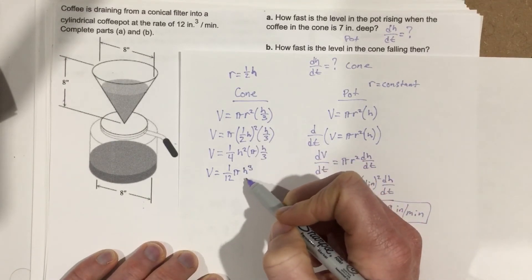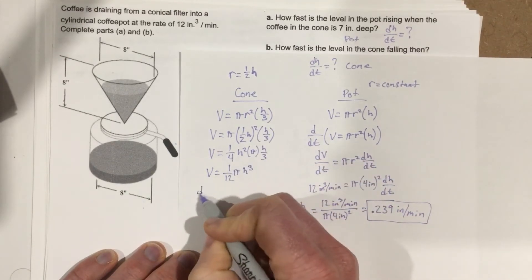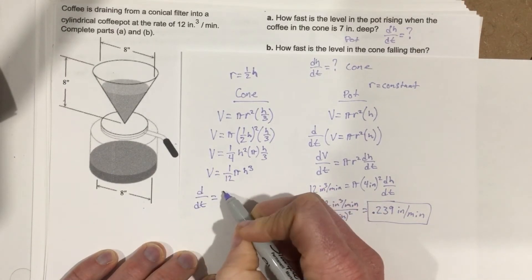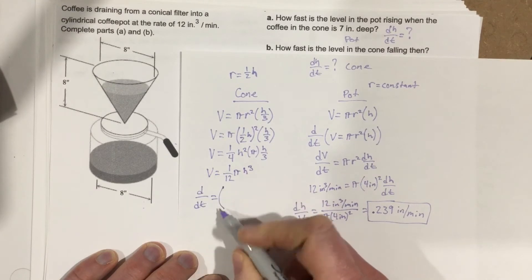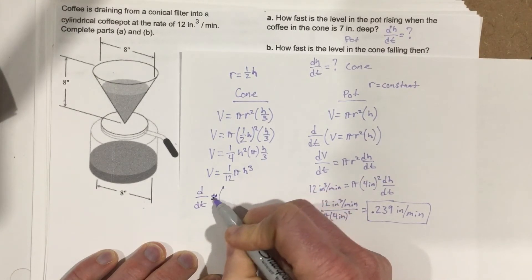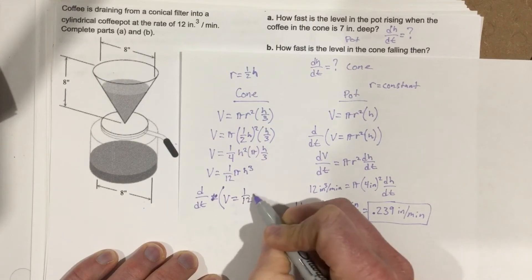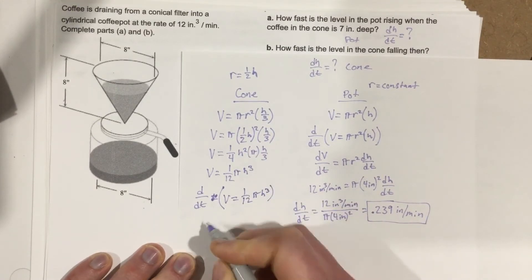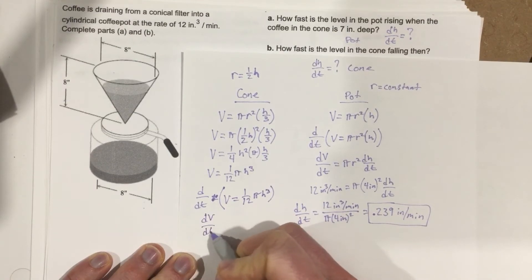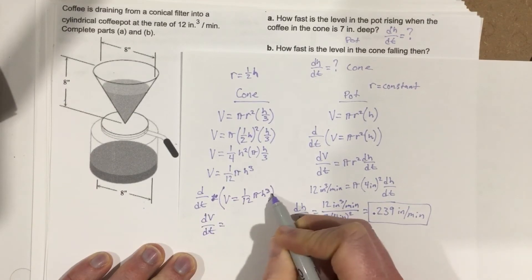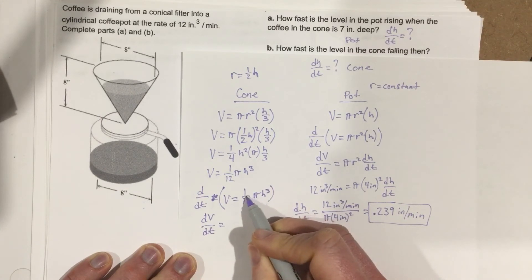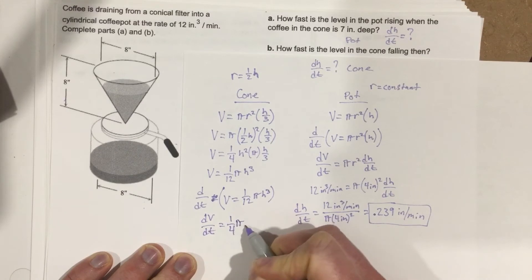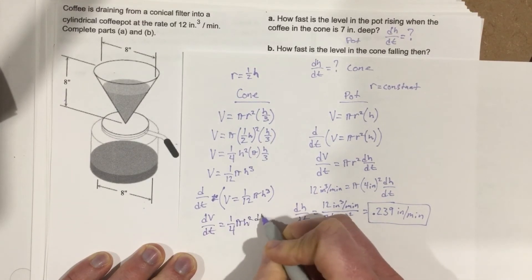Now we can take the derivative with respect to time. When we do the derivative, the 3 comes to the front, so 3/12 is actually 1/4. So dV/dt equals (π/4)h² dh/dt.